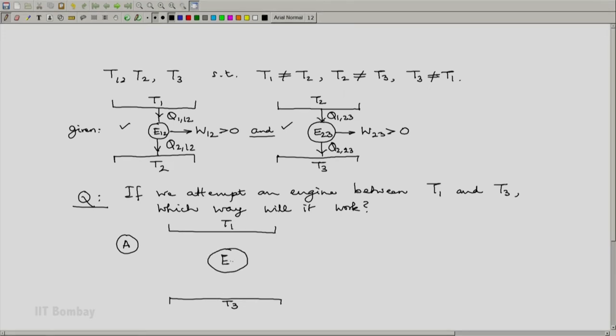The options are A, the engine 13 will work by absorbing from T1 and rejecting to T3 and producing W13. Or B, option B is T1, T3. Let me say this is E31. It absorbs heat from T3, rejects heat to T1 and produces W31 greater than 0.